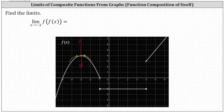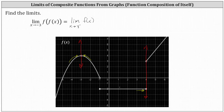This indicates the limit as x approaches negative three of f of f of x equals the limit as x approaches four from the negative side, or from values less than four, or from the left, of the outer function f of x. Now we find this one-sided limit. We're approaching x equals four, which is where f of x has a discontinuity, but only from the negative side or left side, from this direction here. We're approaching a y value of negative two, which indicates the limit as x approaches negative three of f of f of x equals negative two.